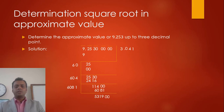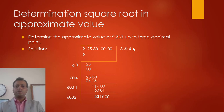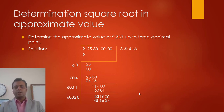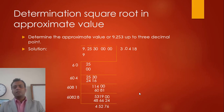Bringing down the next zeros: double of 3041 is 6082. We need a number such that multiplying gives a value near 53190. Taking 8: 60828 × 8 = 486,624. Subtracting gives 45,276. So we have 4 digits after the decimal point — 3.0418.